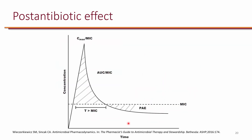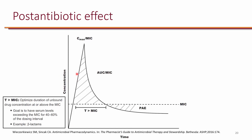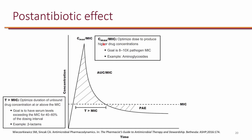Looking at the concentration-time curve: on the horizontal axis is time and on the vertical axis is concentration. The time above MIC is the pharmacodynamic parameter for time-dependent antibiotics, primarily beta-lactams, and we target 40 to 60% of the dosing interval. The peak to MIC ratio is used for concentration-dependent antibiotics like aminoglycosides — our goal is a peak 8 to 10 times the MIC. For example, if MIC is 1, we want the peak to be 8 to 10; if MIC is 2, the peak should be 20.